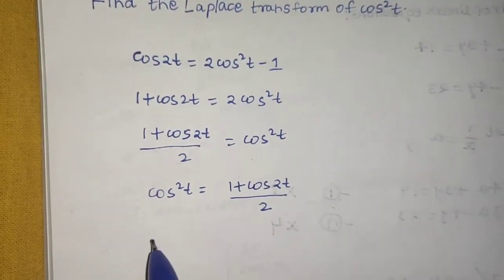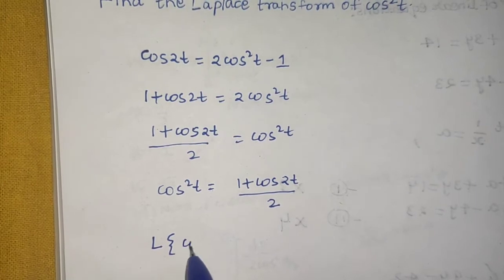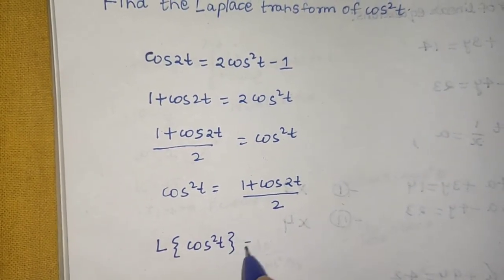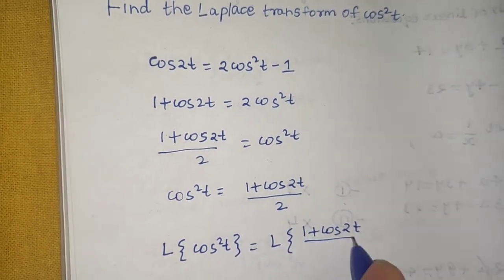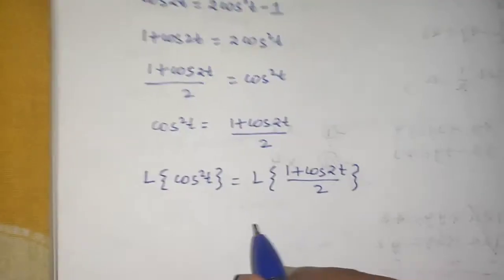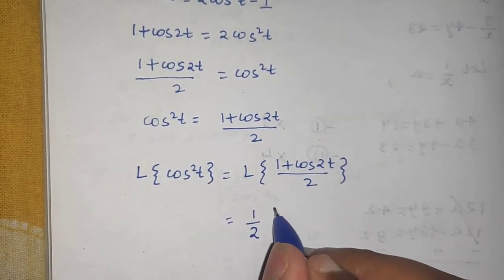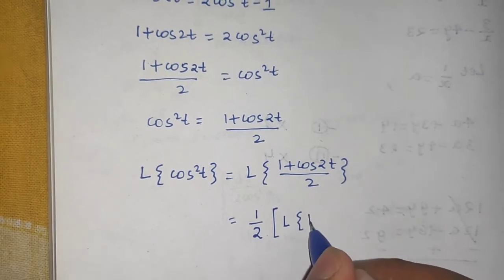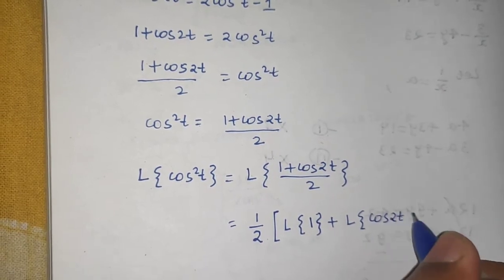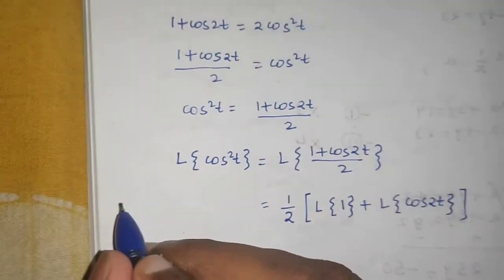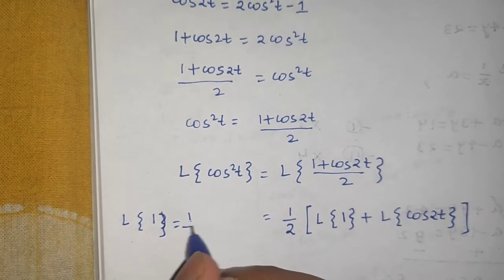Now taking the Laplace transform on both sides, we get L{cos²(t)} = L{(1 + cos(2t))/2}. We can take 1/2 out as it is a constant, and write this as (1/2)[L{1} + L{cos(2t)}]. We already know that L{1} = 1/s.